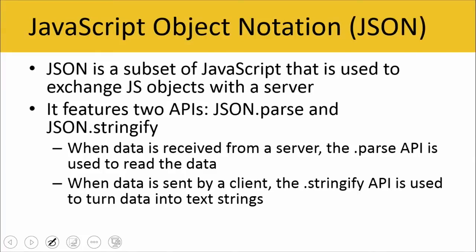With JavaScript, we typically find ourselves using JavaScript Object Notation to do our parsing. It's called JSON — a subset of JavaScript that is used to exchange JavaScript objects with a server. There are two APIs within JSON: .parse and .stringify. When data is received from a server, the .parse API is used to read through the data and break it down into its smaller component parts. And when the data is sent by a client, the stringify API is used to turn that data into strings so that it can be sent.